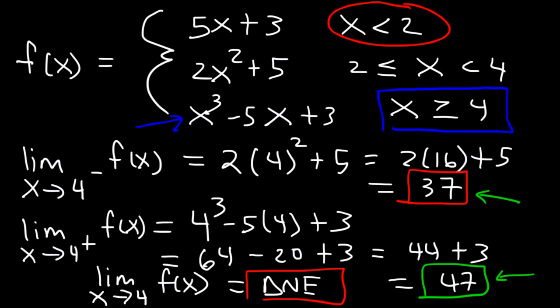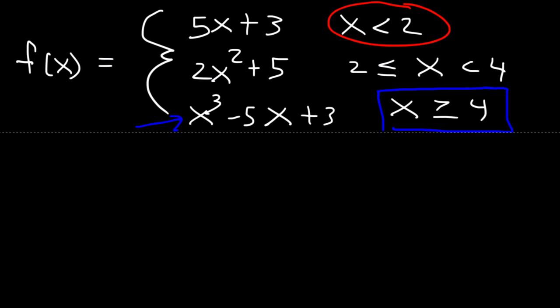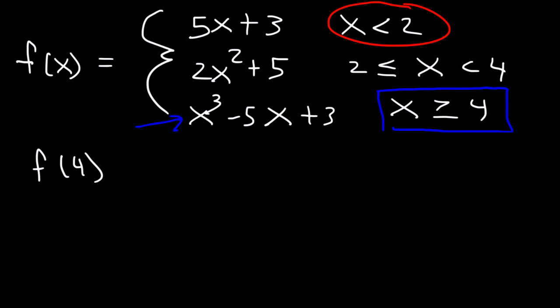There's one more question: what is the value of f(4)? When x is exactly 4, we use the piece x cubed minus 5x plus 3, which we already computed gives 47. So f(4) equals 47.